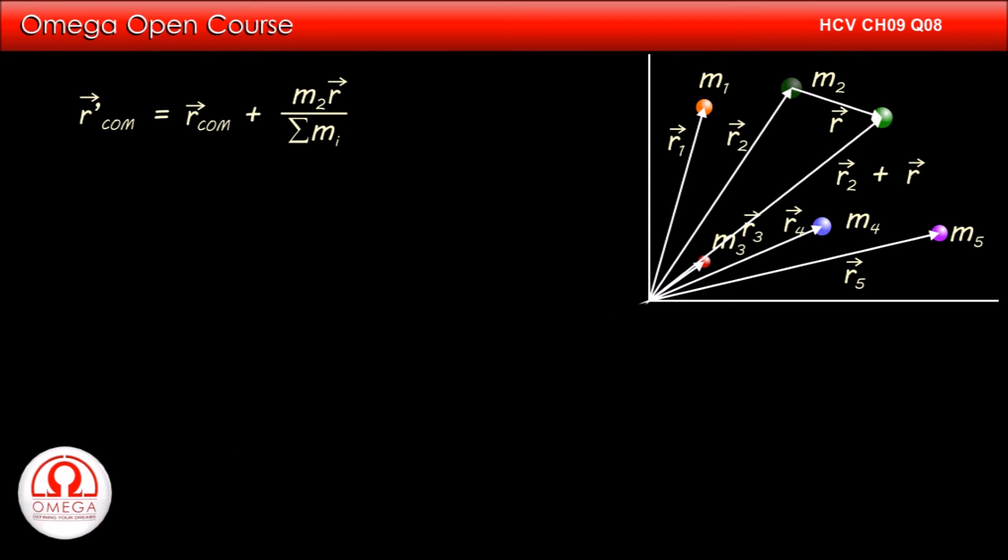If we subtract the original position of center of mass from the new position of center of mass, we get the displacement of center of mass. Thus the displacement of center of mass is equal to mass into its displacement divided by total mass of the system.